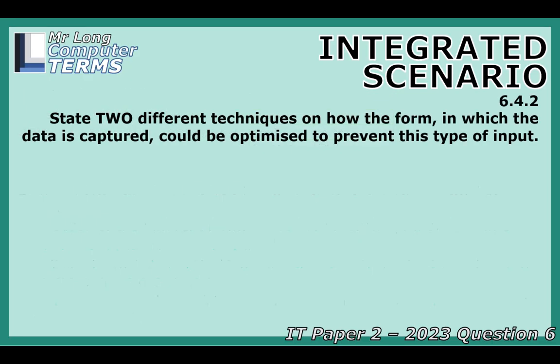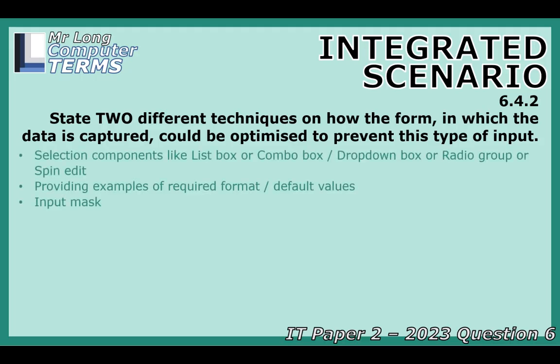How could the school fix its form to prevent this? One of the best techniques is using selection controls, like a drop-down menu where you pick from predefined options — Grade 7, Grade 8, etc. — so the user can't type it wrong. You could also use radio buttons. Another way is providing clear instructions or an example next to the field, like 'Enter grade, for example 7.' You could even use an input mask to force input into a specific pattern, though drop-downs are usually best for this kind of field.